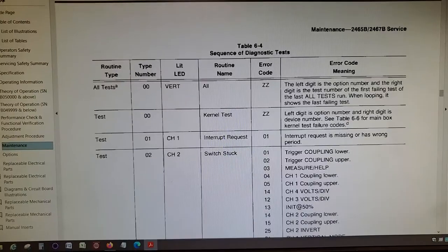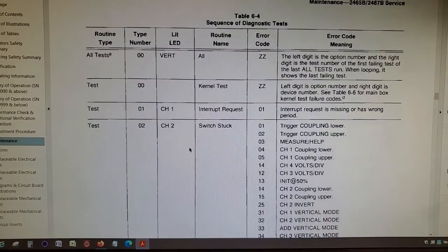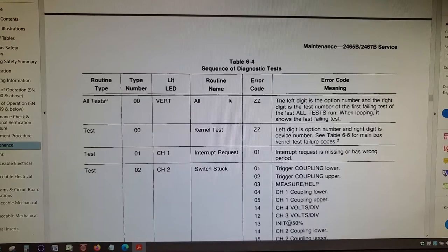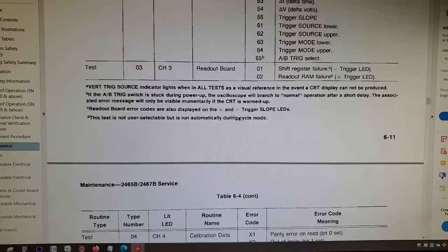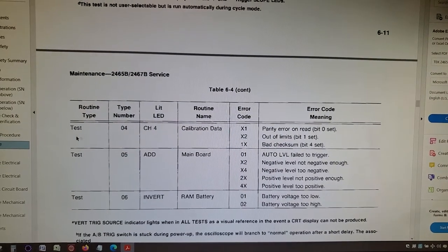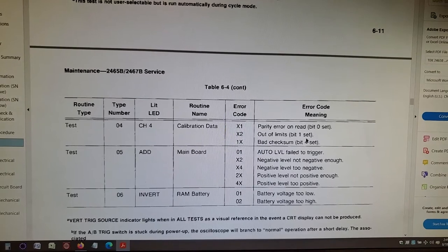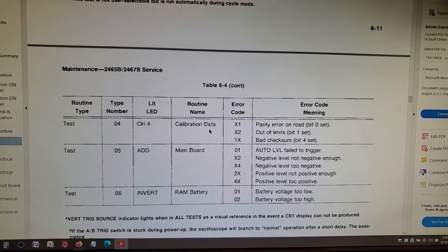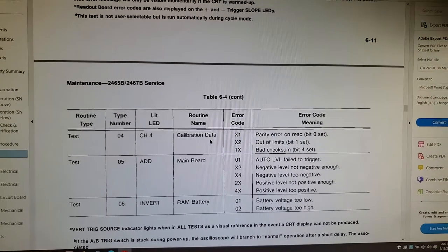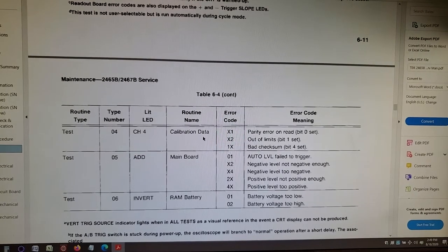Okay, I just went over to the screen here to look at test four. Scroll down - and this is in table 6-4 by the way, on table 6 or page 6-11. So you go down here to where it says test 4-0-2: out of limits, bit one set, meaning that the calibration data is incorrect. It means the scope needs to be calibrated or there was a fault during calibration, which that scope has. Doesn't mean the scope is not usable, it just means it's not accurate.